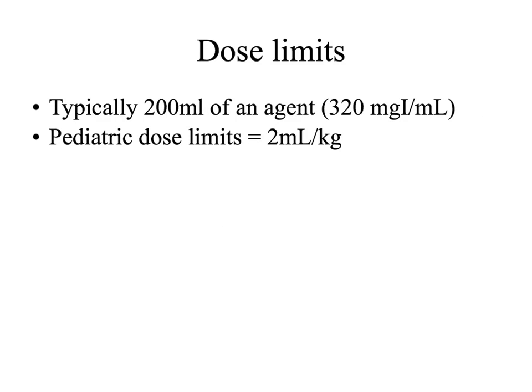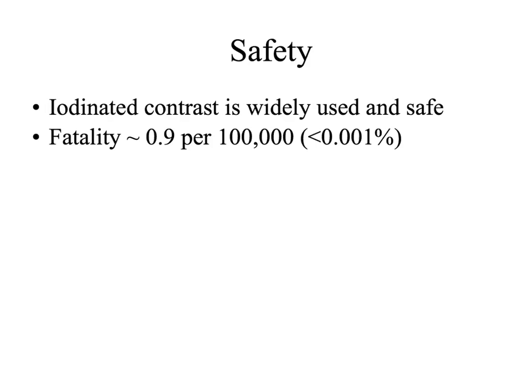For dose limits, for a 350 mg/mL solution the ceiling is about 200 milliliters. For pediatric doses, we track down their kilogram weight — most hospitals use kilogram-based dosing for patients under approximately age 12. The calculation is one milliliter of contrast per kilogram of weight. On the whole, this stuff is pretty safe — fatality is about 0.001% or less.